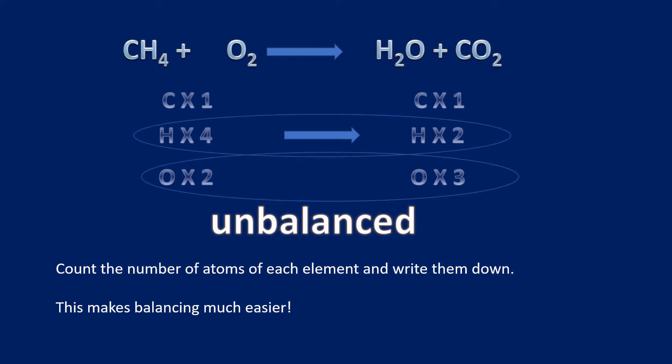I'm going to have to increase the number of hydrogens on the right-hand side. The only way I can increase the number of hydrogens is to put a number in front of the water. A common mistake is that people just change the subscript number — you can't do that. As soon as you change these little subscript numbers, you're changing what that substance is. Water is H2O — we can't mess with the little ones.